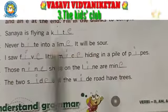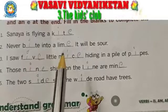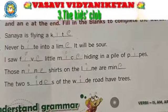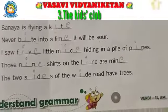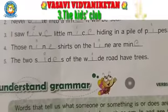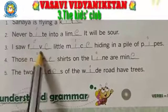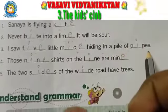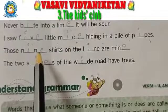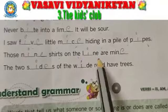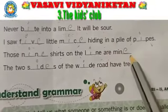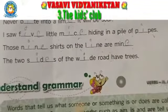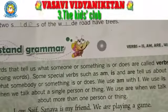It will be sore, and then bite, bit, bite, lime, lime. I saw five little mice hiding in a pile of pipes. Those nine sheds on the line are mine. The two sides of the wide road have trees. You should copy all these in your textbooks.